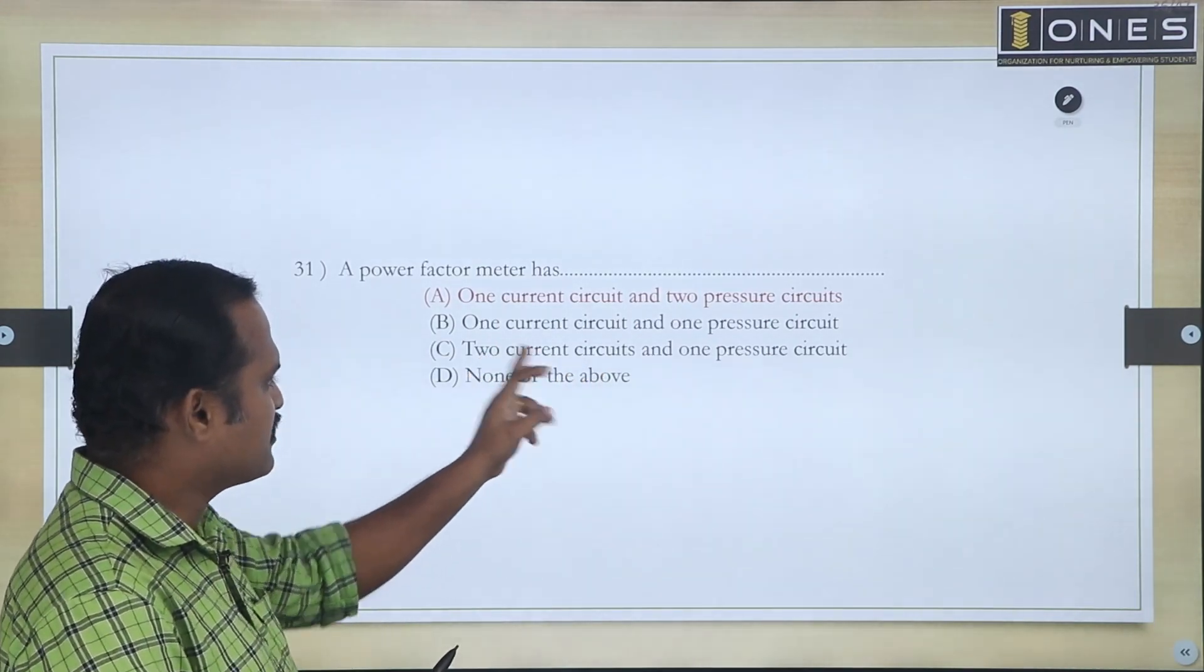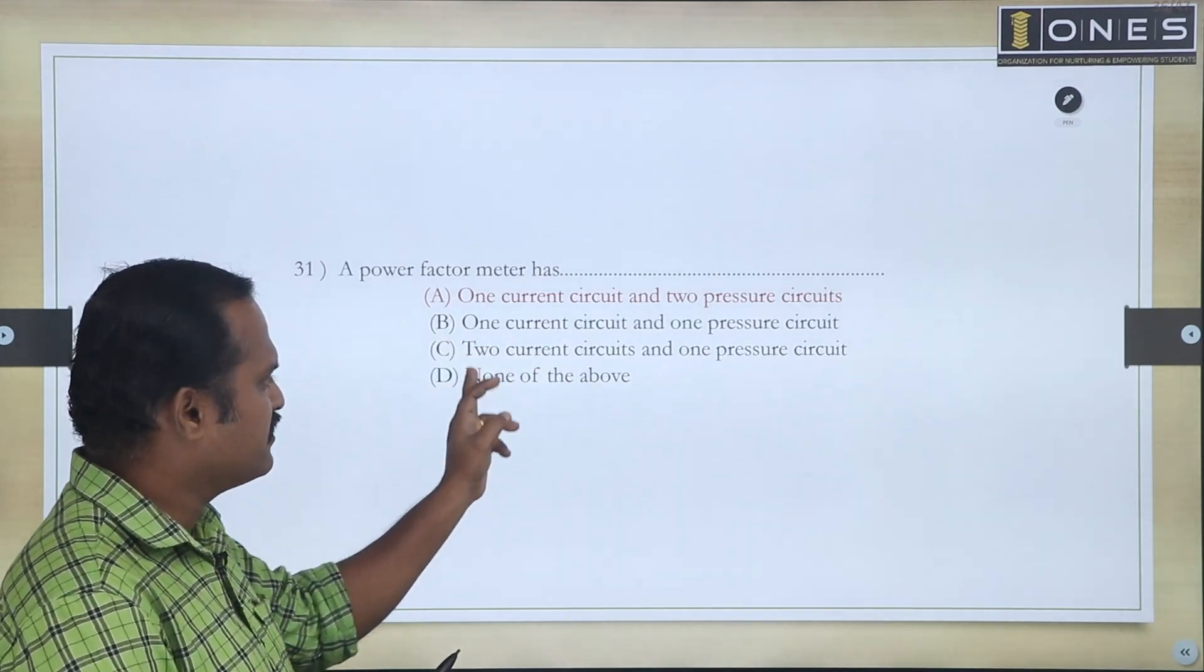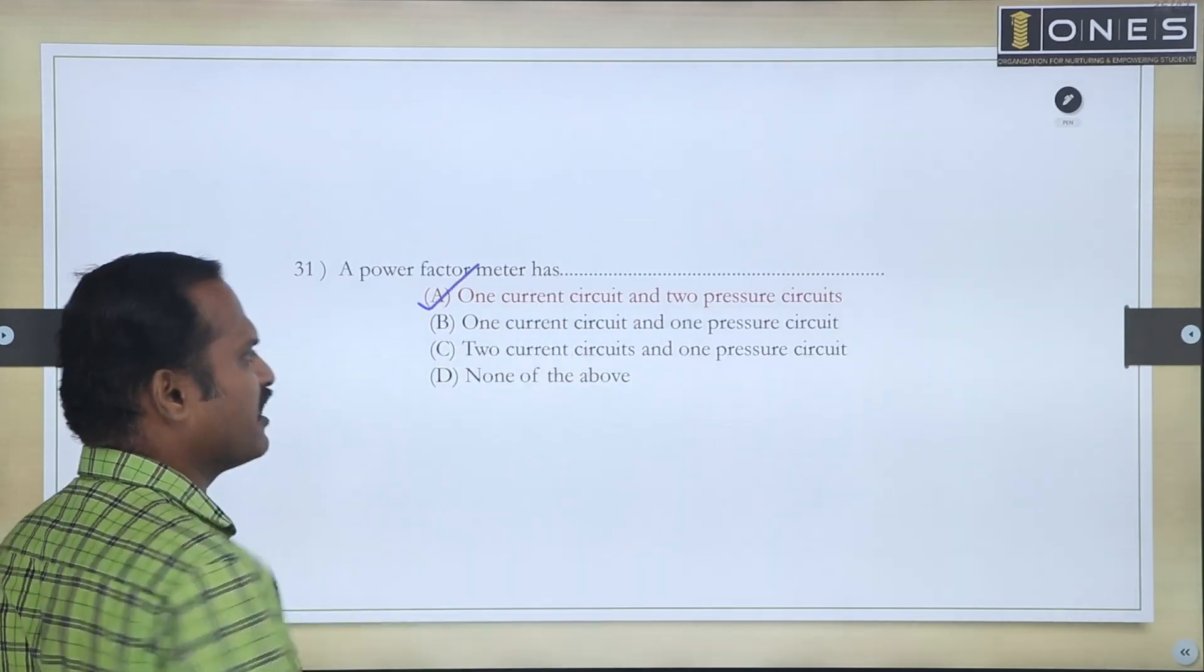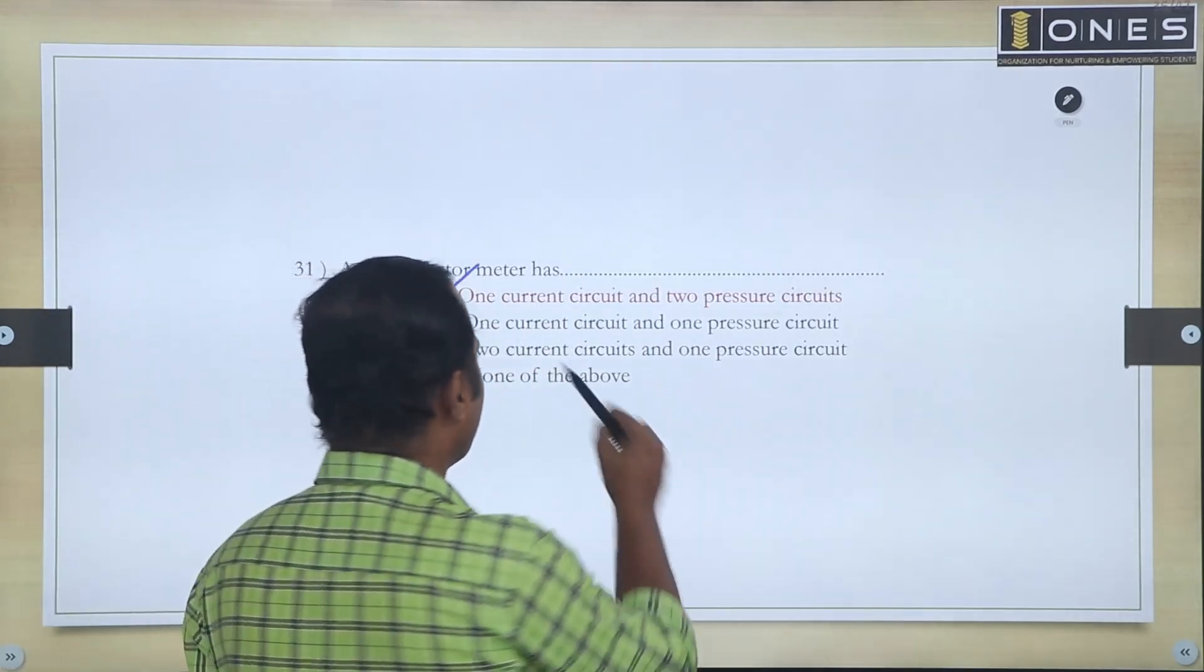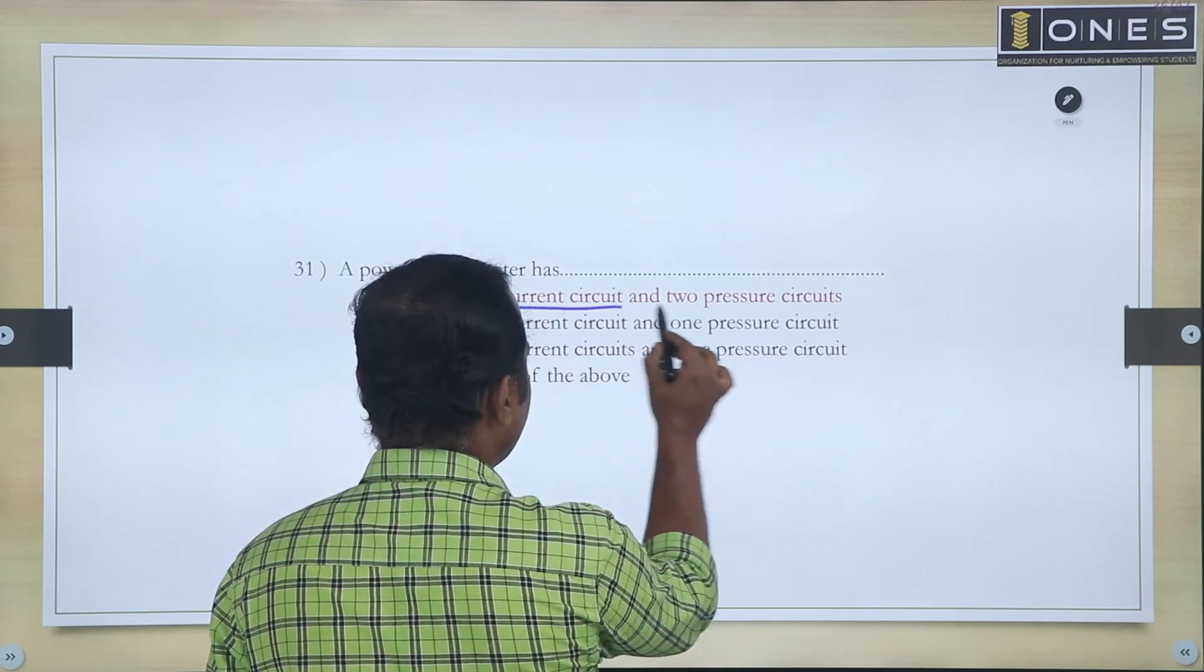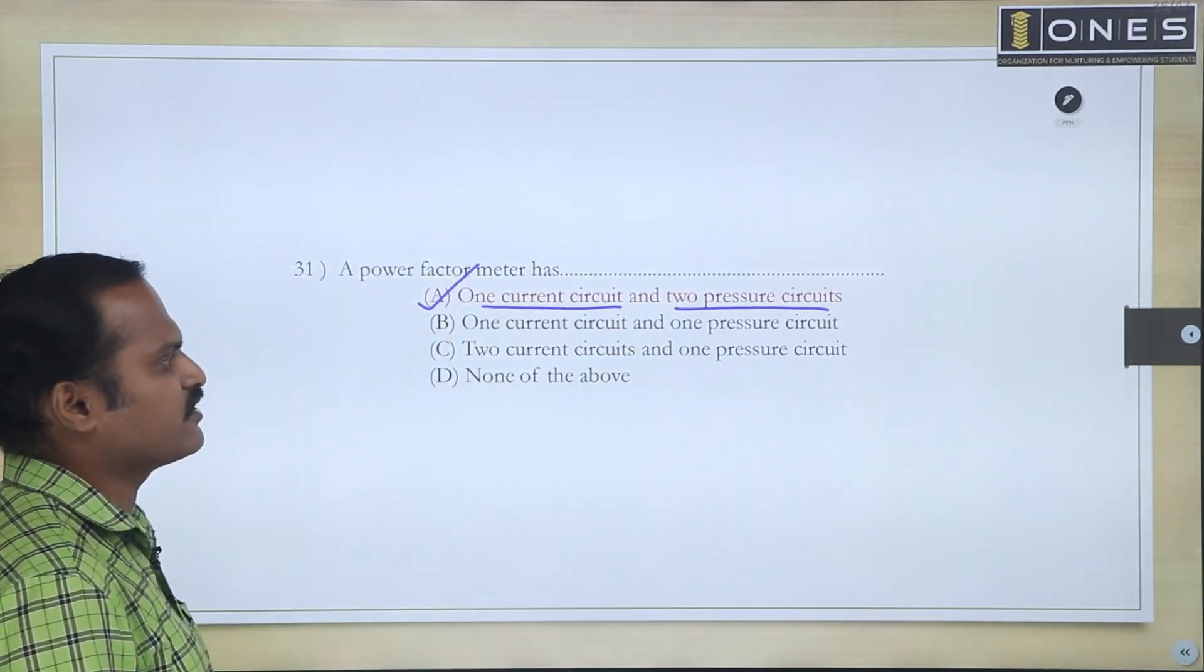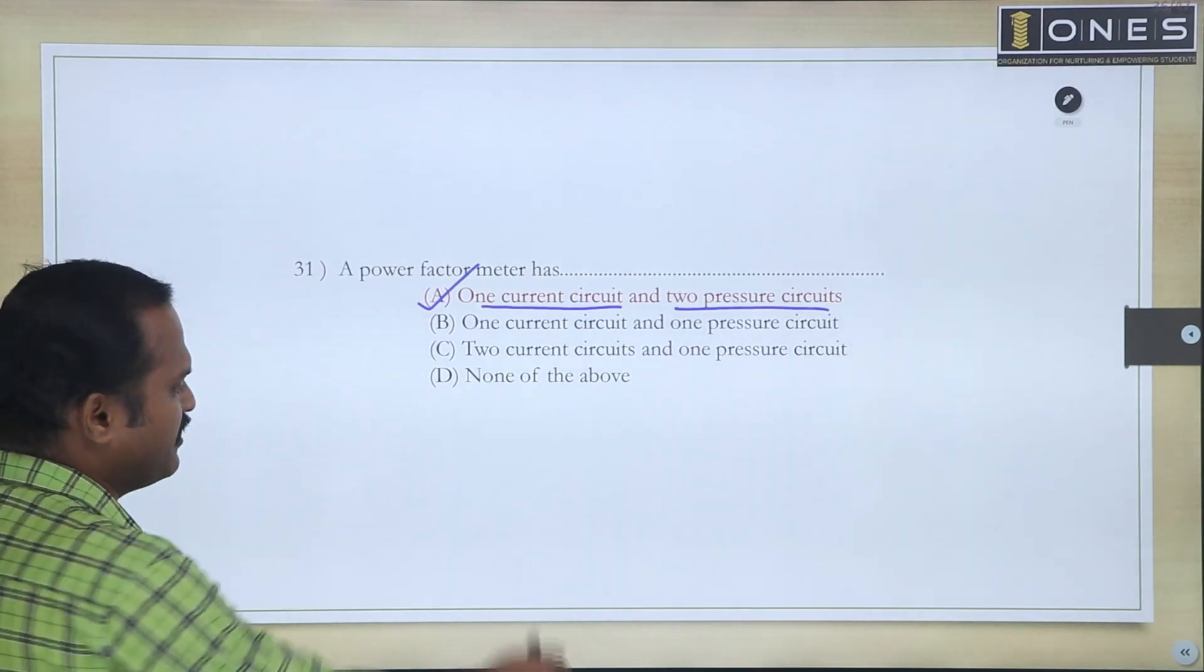Second option: two current circuits. Then none of them. One current circuit and two pressure circuits. So a power factor meter has one current circuit and two pressure circuits.